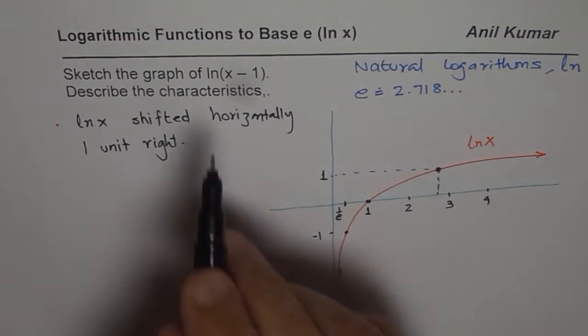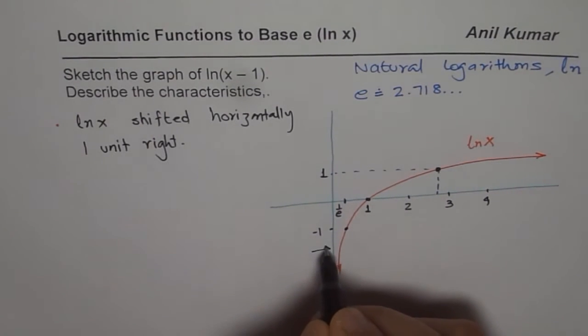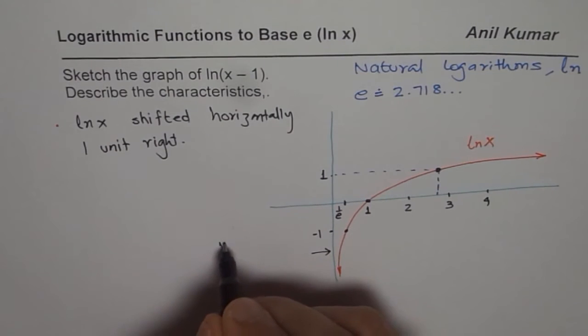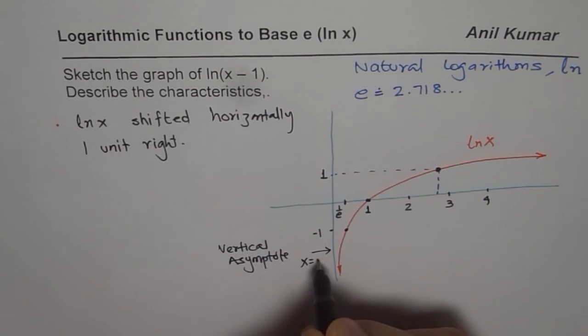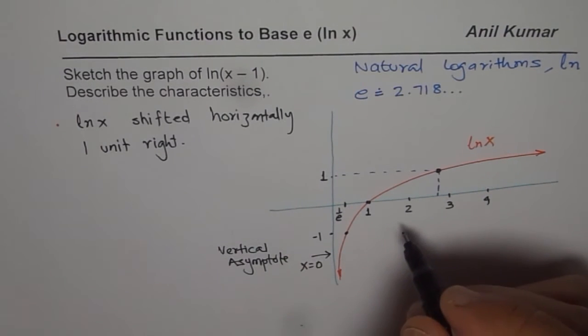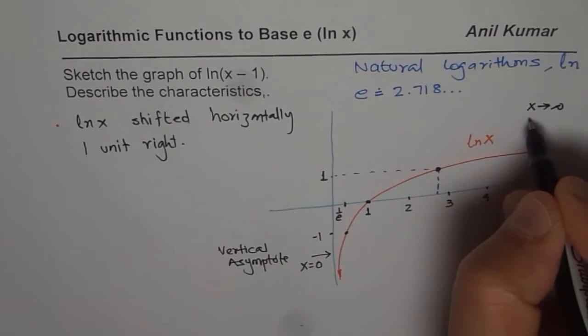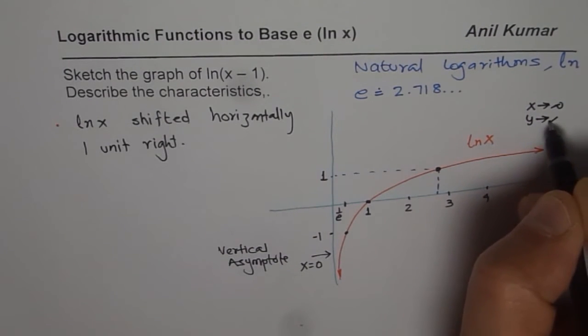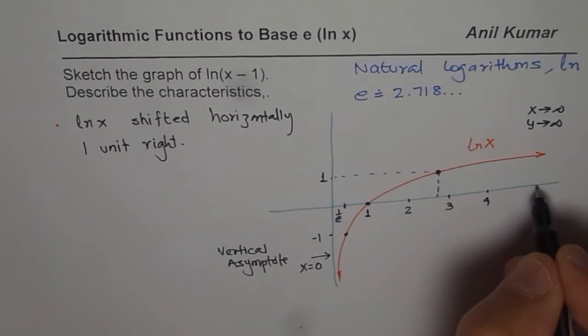I'll work with these three points to show you how to sketch the graph of ln(x-1), and of course one critical point which I have is the vertical asymptote. We know that the vertical asymptote here is x equals 0. It is always increasing; as x approaches infinity, y also approaches infinity.